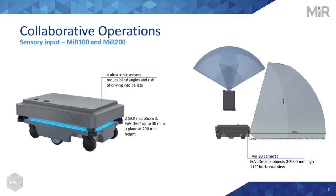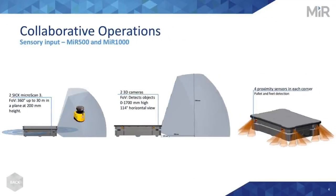Now let's talk about the hardware. There are two safety scanners on the front left and front right, and one on the back right corner, allowing for a 360-degree view around the MIR. We also have 3D cameras on the front, which allow it to see things on the floor as well as things up high, up to about a meter and a half. The larger robots — the MIR 500 and 1000 — also have proximity sensors with four sensors at each corner.